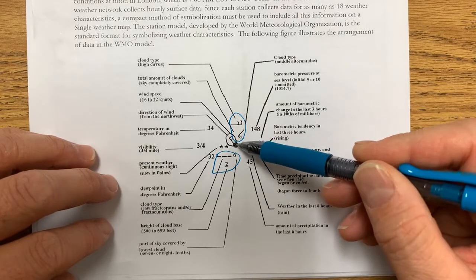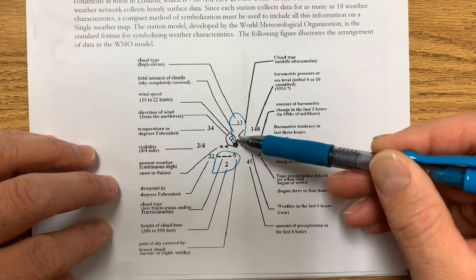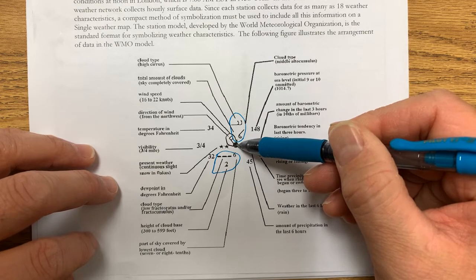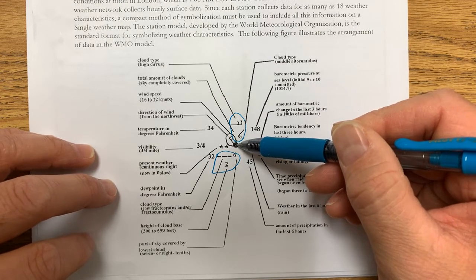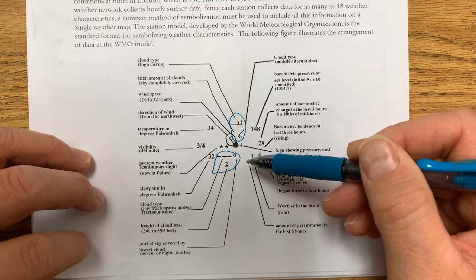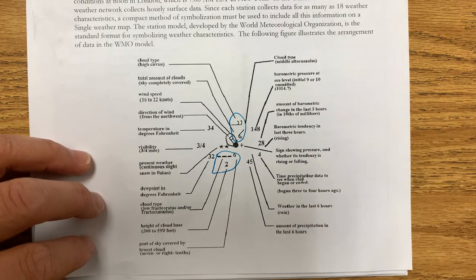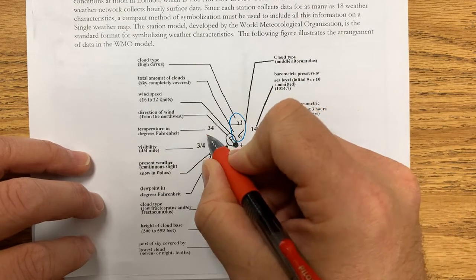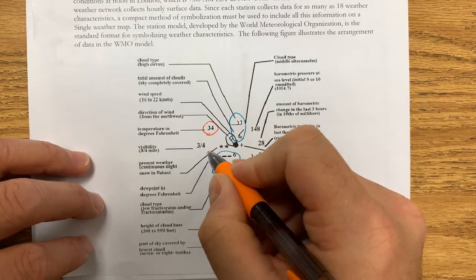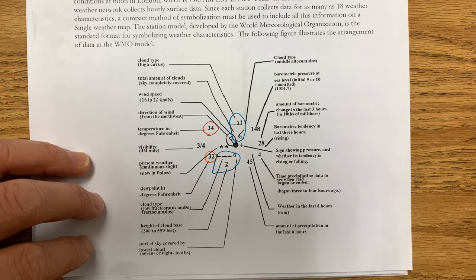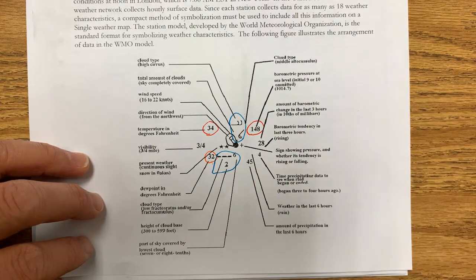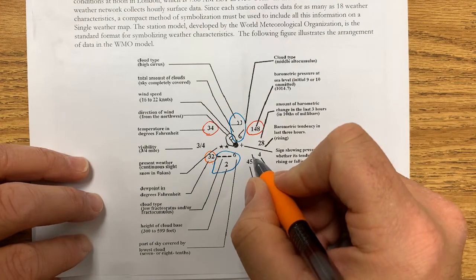In general, these weather station models are shown in a standard notation. In the center is the location and a little wind barb shows the wind speed and direction. You also know what the cloud cover is like — if the circle is completely colored in, that means it's overcast and cloudy. It even tells you the types of clouds right above the center. Temperature is usually given in the upper left. Dew point temperature is given in the lower left. The pressure of the area is given in the upper right, and the precipitation amounts in the lower right.